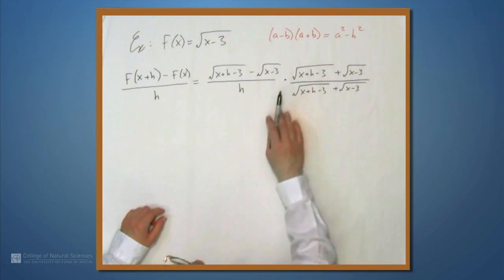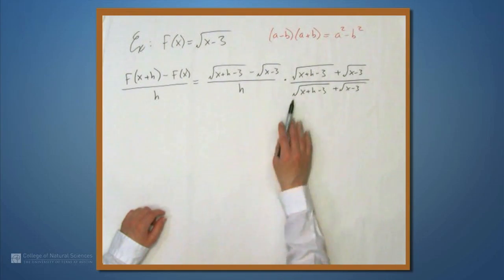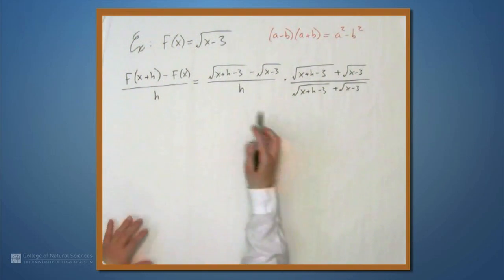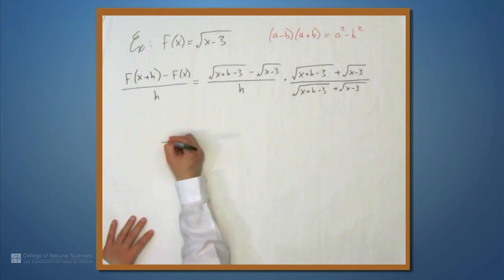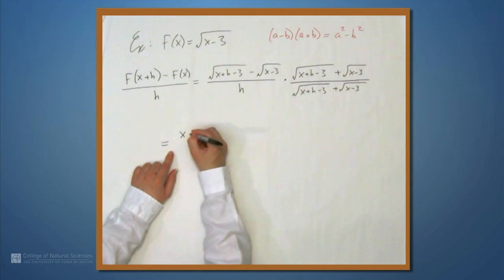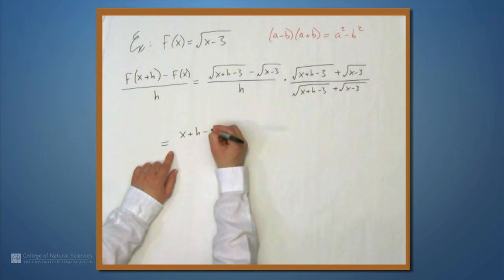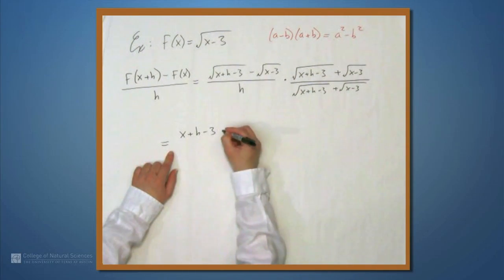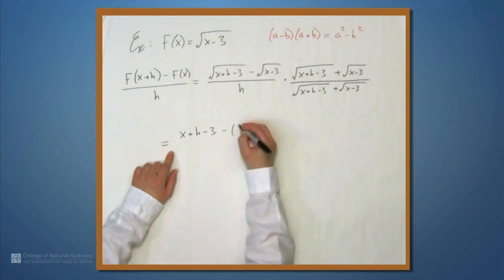And so, when we square both a and b, we're going to get rid of the square roots. That's why multiplying by the conjugate works. So, this, by this formula, equals what's under the square root here. So, this is x plus h minus 3 minus what's under the other square root, x minus 3.